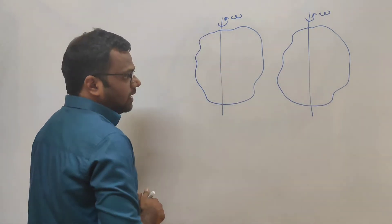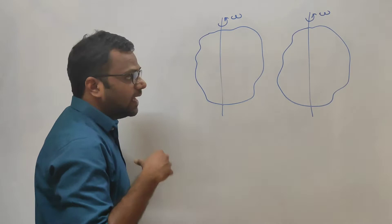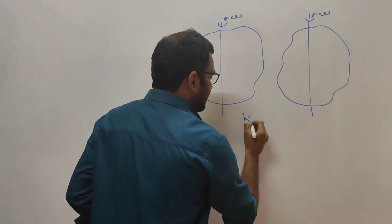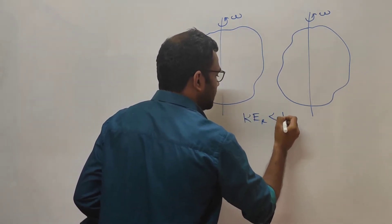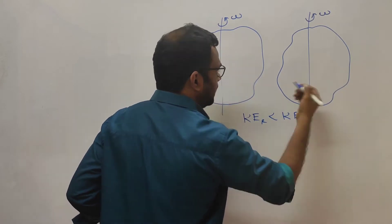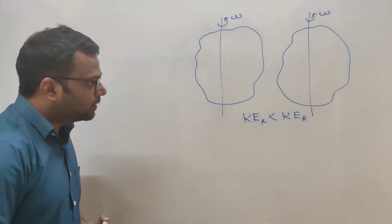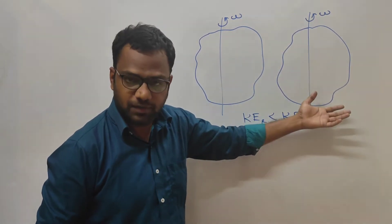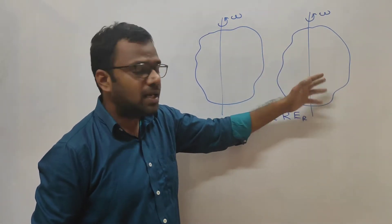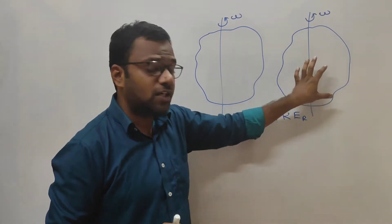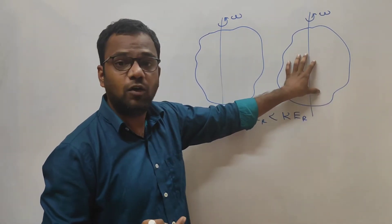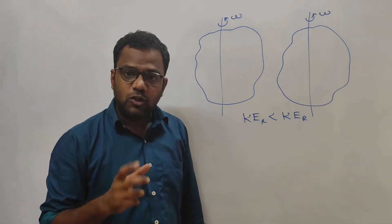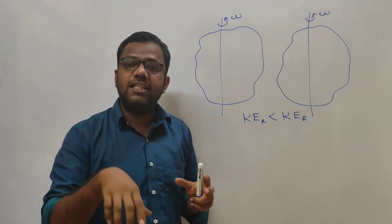Since I have spent more energy on this body, the kinetic energy of rotation associated with it should be greater than the first body. So the rotational kinetic energy of the first body should be lesser than the rotational kinetic energy of the other body. This is because I spent more energy on it, and that is because its rotational inertia — the moment of inertia — is more.